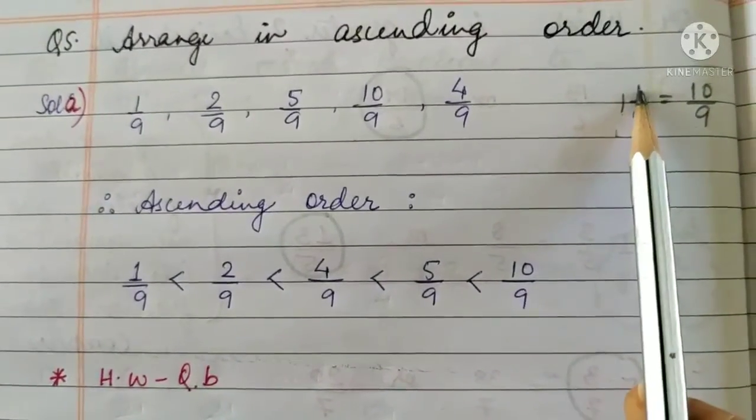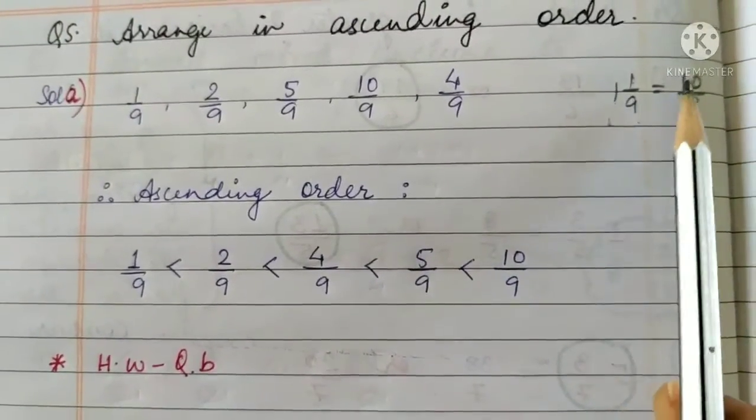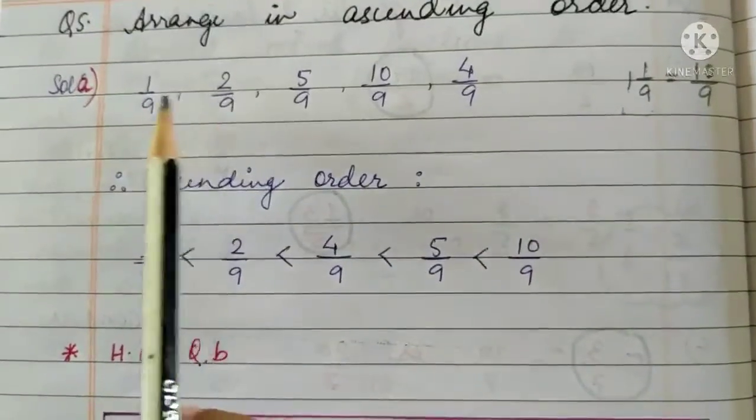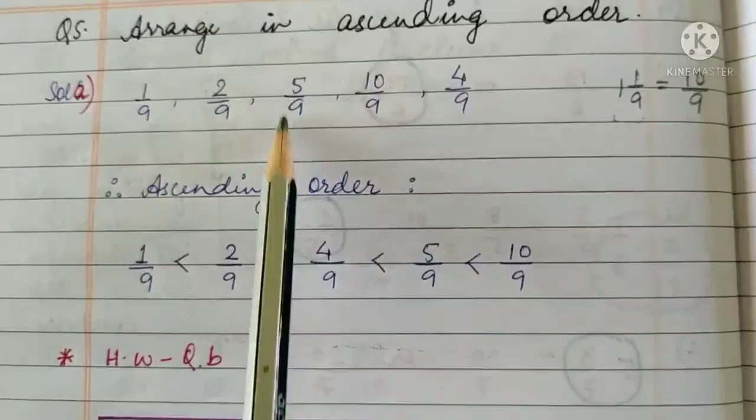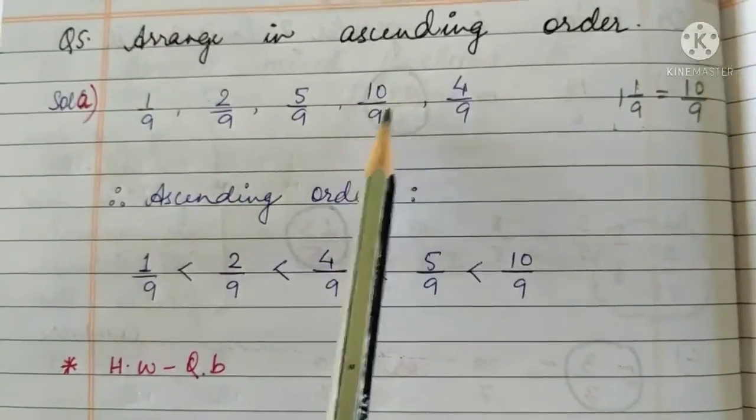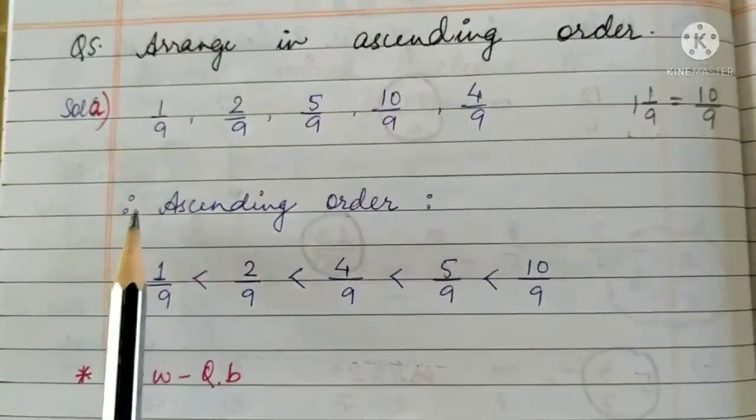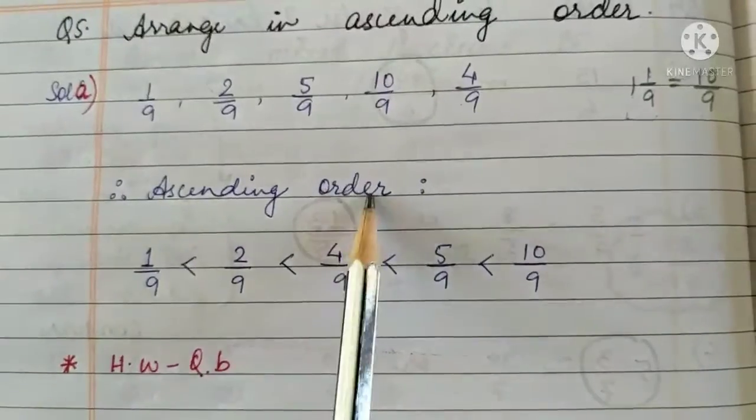So we have changed this mixed fraction into an improper fraction. 9 times 1 is 9 plus 1, 10. So 1 1/9 becomes 10 by 9. So here we have the question as 1 by 9, 2 by 9, 5 by 9, 10 by 9 and 4 by 9. Now we are arranging it into ascending order,